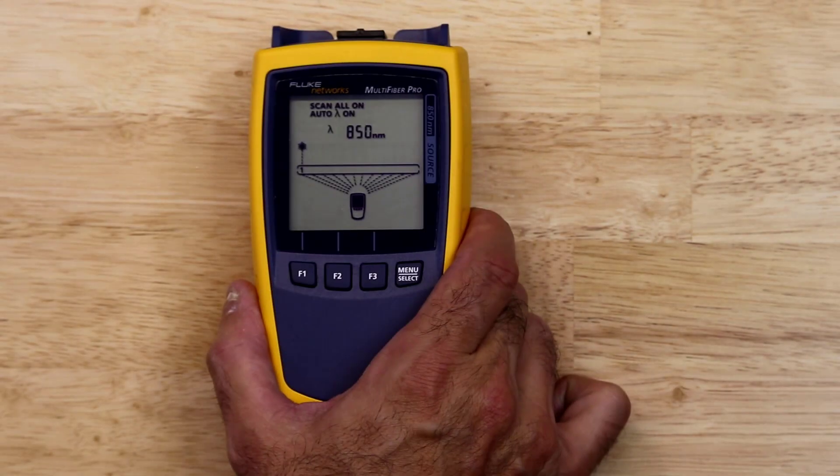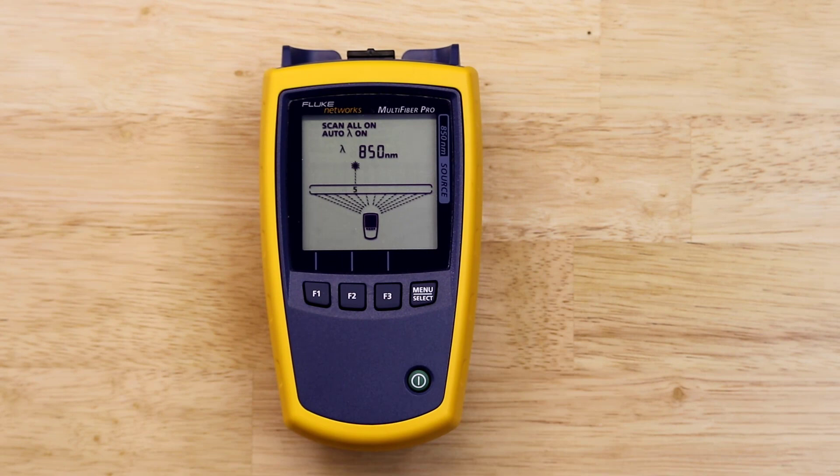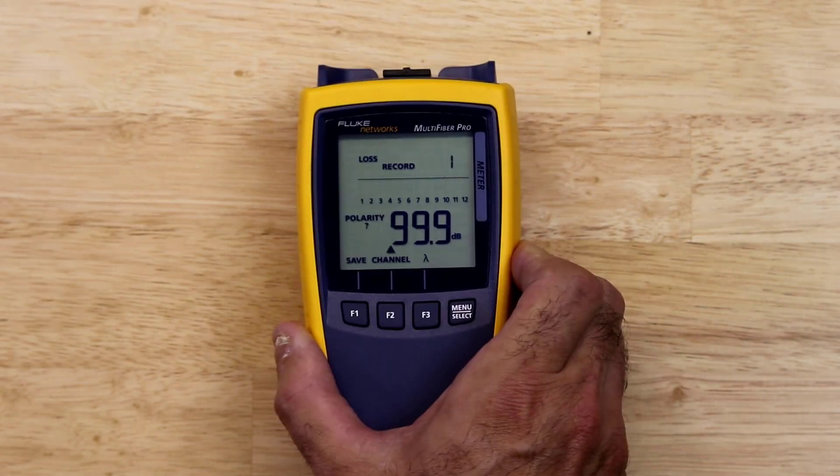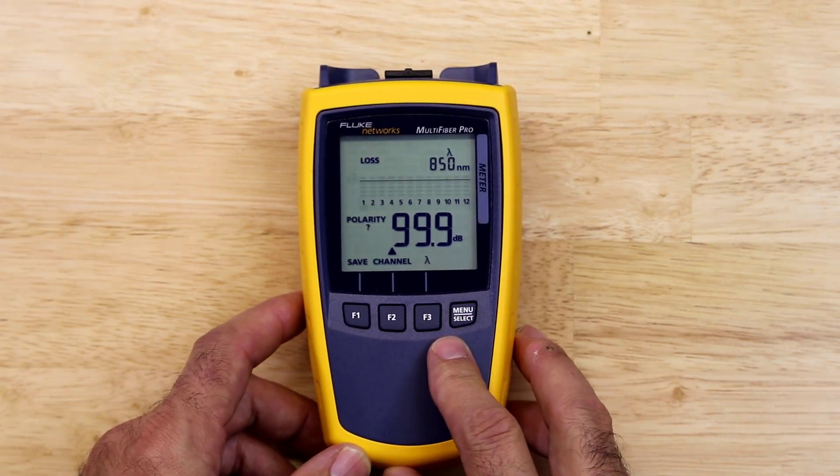Now let's take a look at the equipment we'll be using for testing the MPO trunk cable. First, we have the light source. In this case, I'll be testing multi-mode fiber, so I'll be using the 850 nanometer light source. Here we have the power meter. It is on the power meter that we set the loss limit.